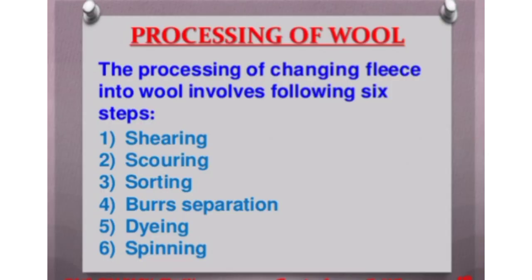The next topic is processing of wool. There are different methods of processing wool. The processing of changing fleece - or fur - into wool involves the following six steps: first is shearing, second is scouring, third is sorting, fourth is burr separation, fifth is dyeing, and the sixth and last is spinning.